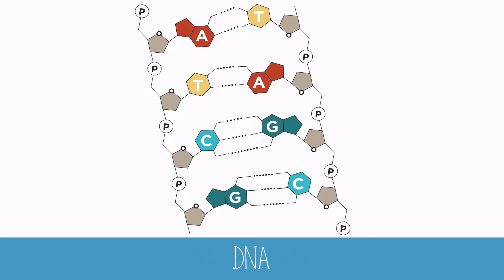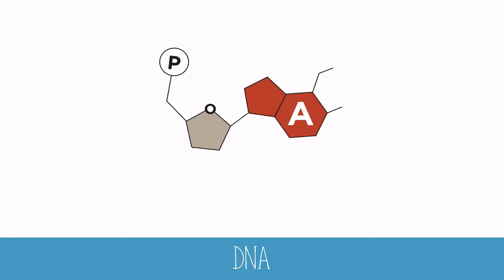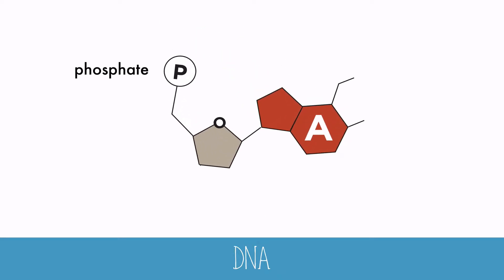To understand DNA replication clearly, it helps to understand the structure of DNA. The nucleotide is the base unit of the DNA molecule, which is made of phosphate, deoxyribose sugar, and a nitrogenous base. This base is adenine, but there is also thymine, guanine, and cytosine. The nucleotides covalently bond to other nucleotides at the sugar and at the phosphate.